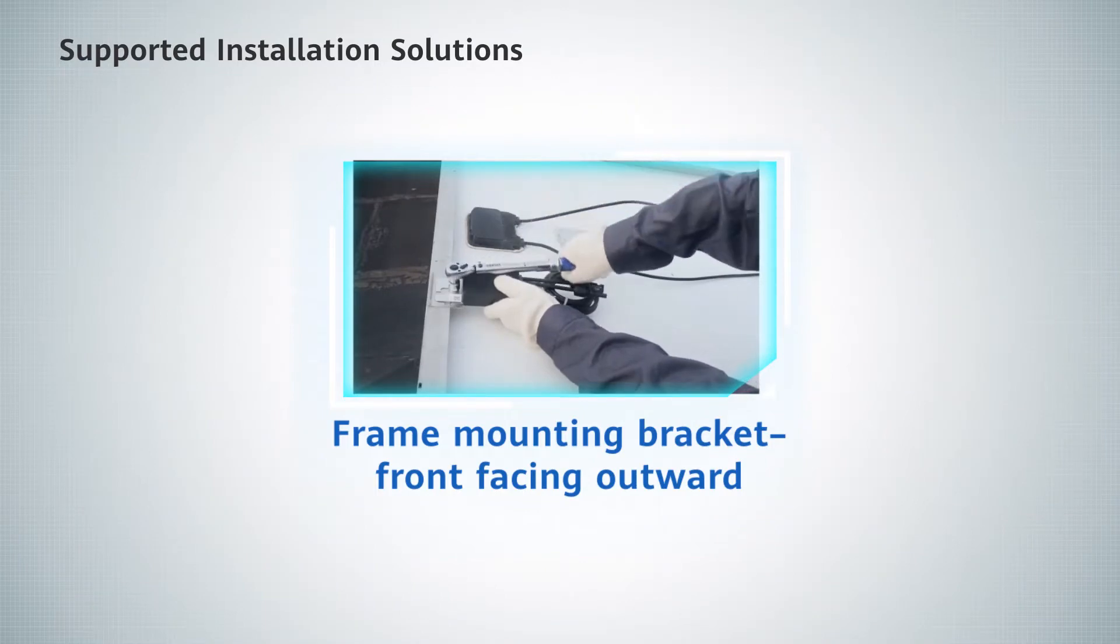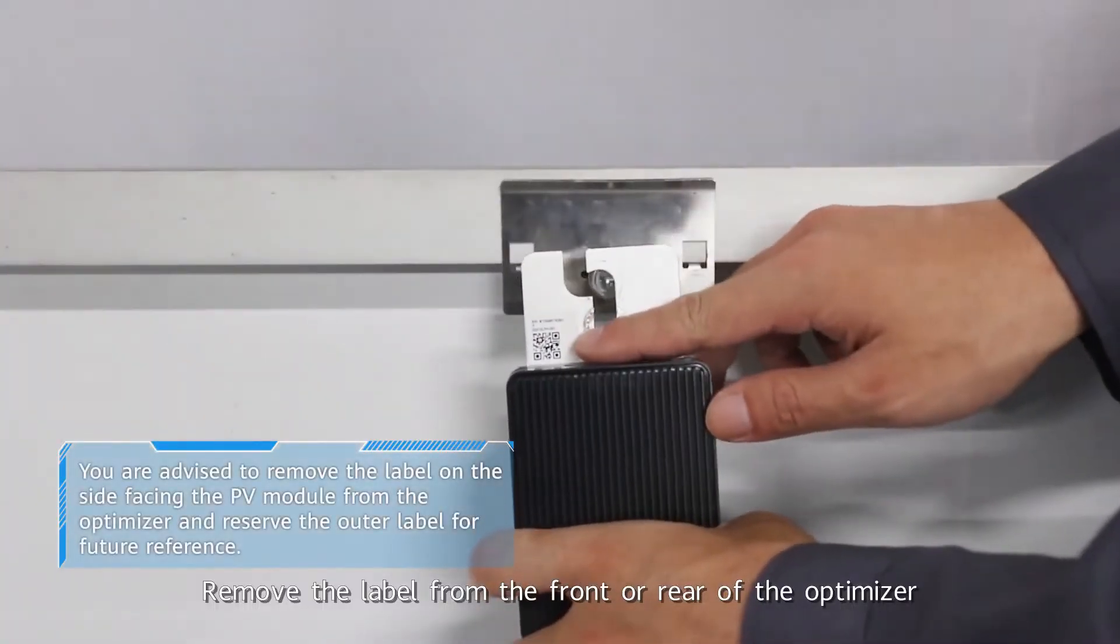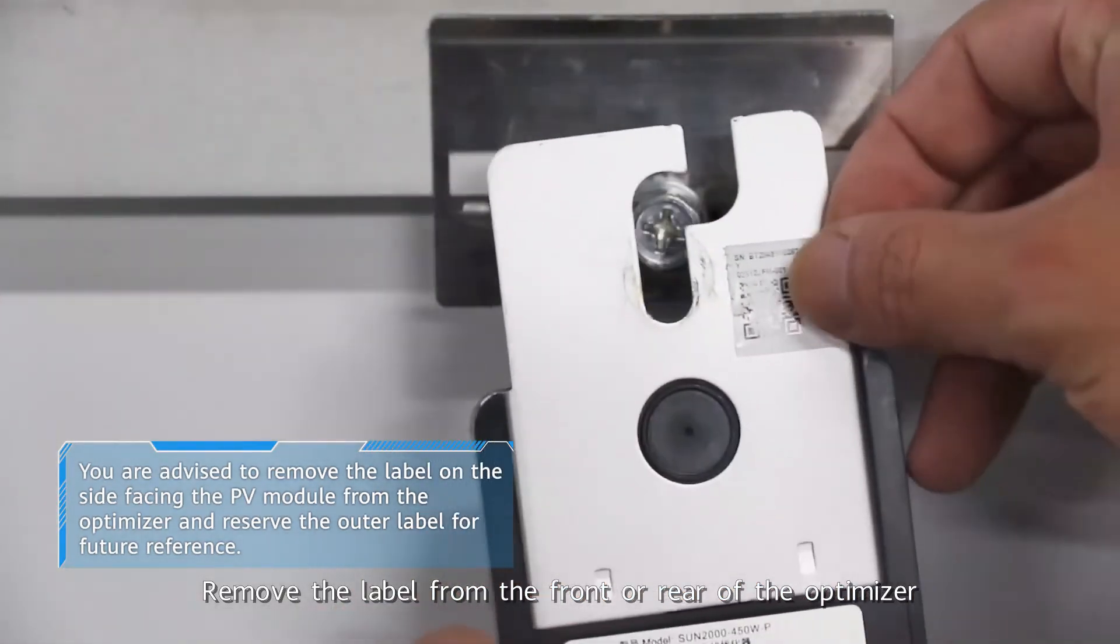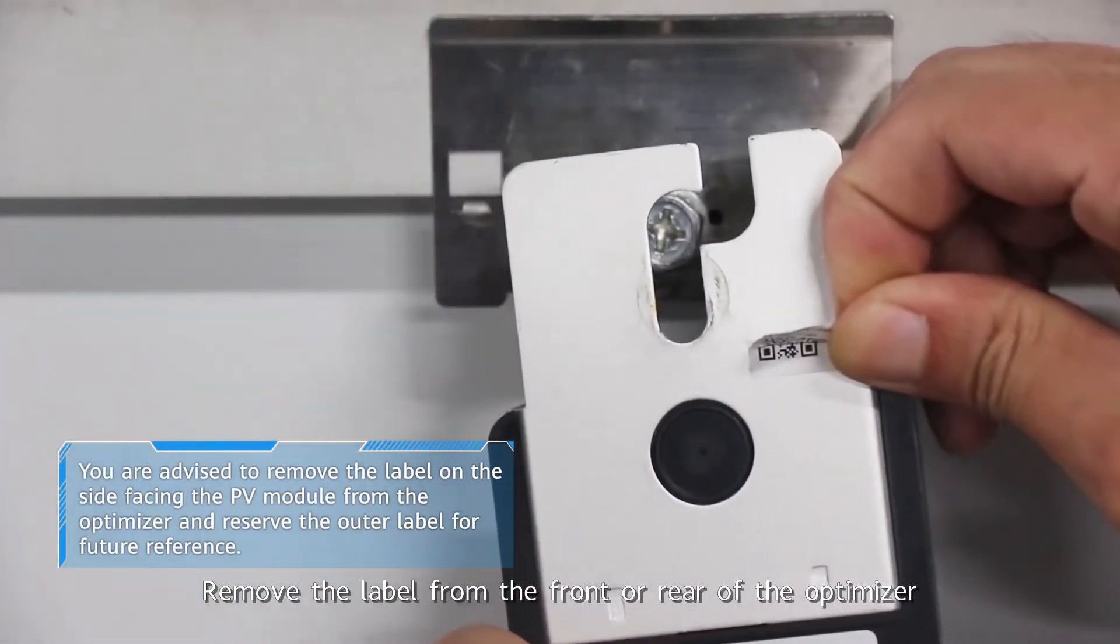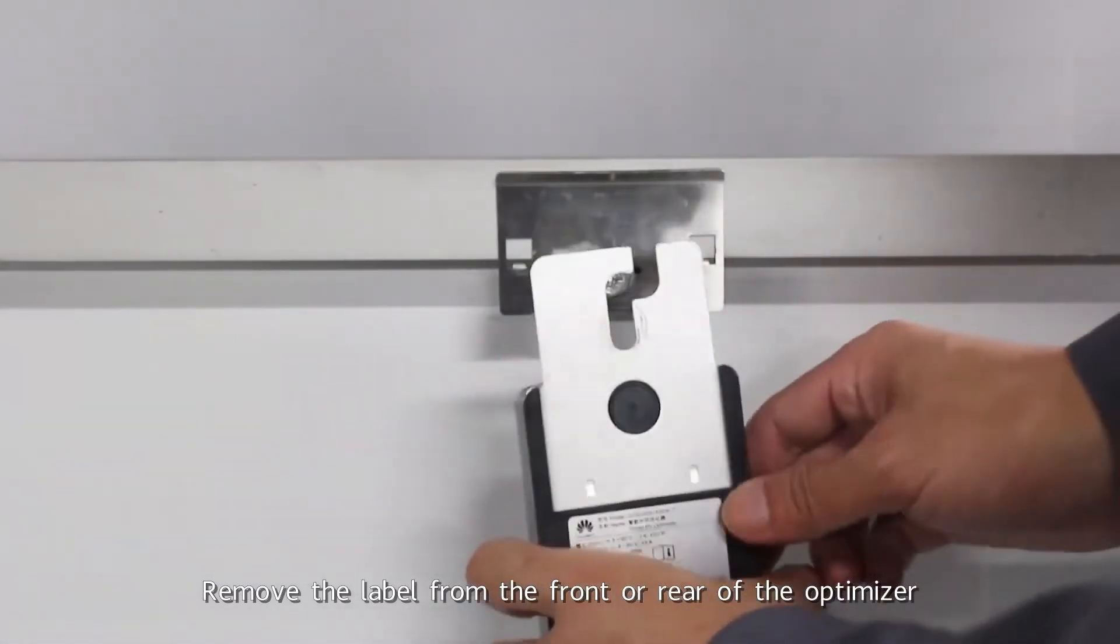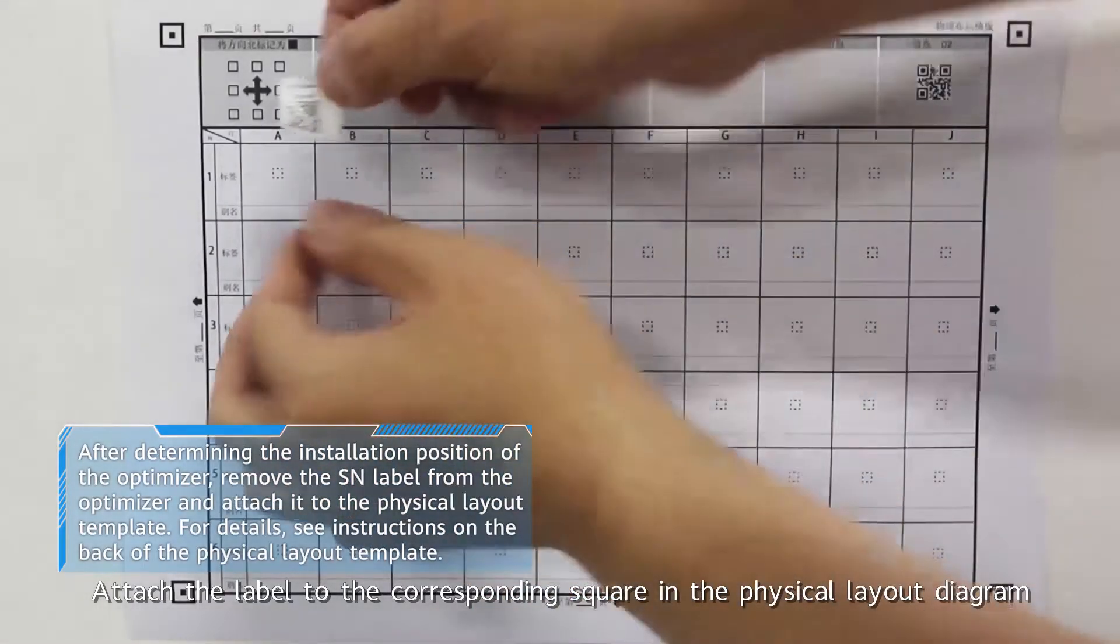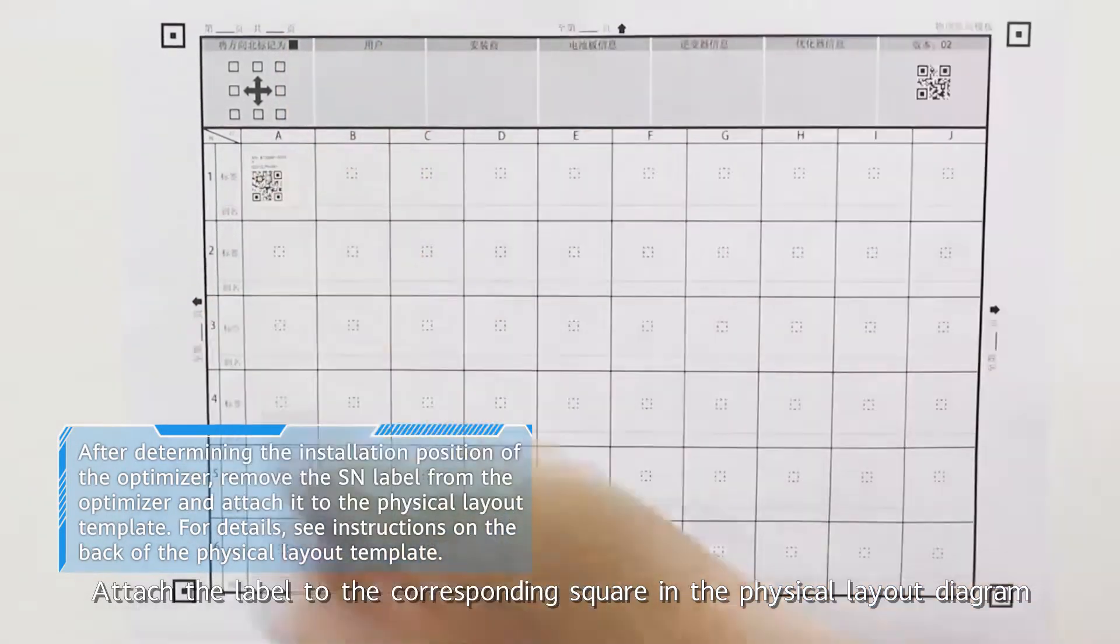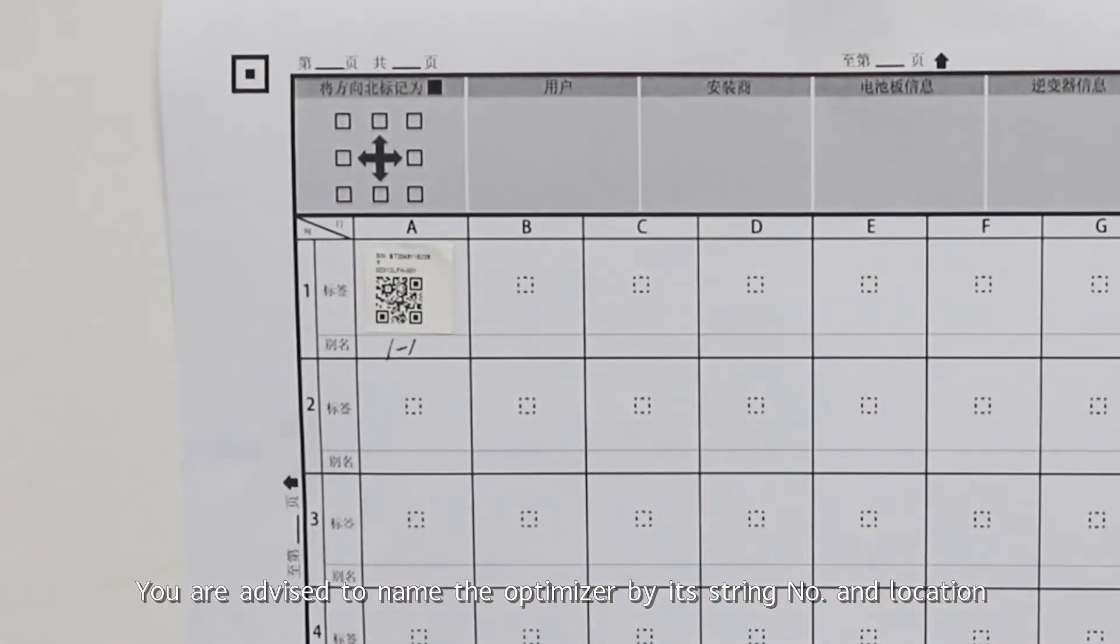Frame mounting bracket, front facing outward. Remove the label from the front or rear of the optimizer. Attach the label to the corresponding square in the physical layout diagram. You are advised to name the optimizer by its string number and location.